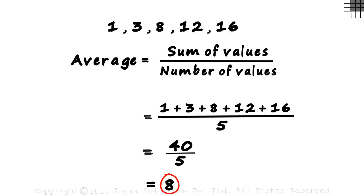This is the average of the five numbers in the list. The average is also called the mean, or to be more precise, the arithmetic mean.